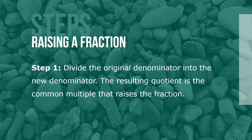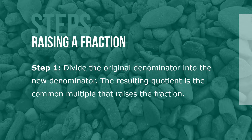Here are the steps to raising a fraction. Step 1: Divide the original denominator into the new denominator. The resulting quotient is the common multiple that raises the fraction. Step 2: Multiply the numerator and the denominator of the original fraction by the common multiple.